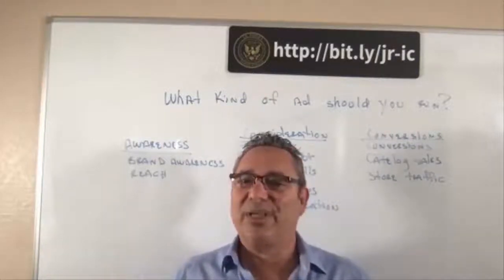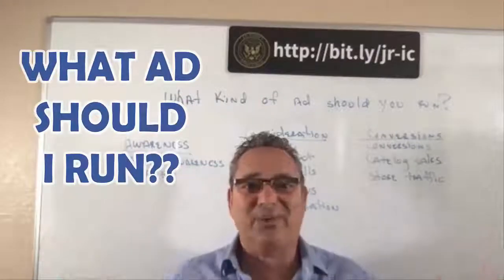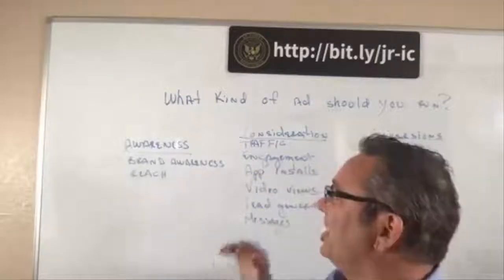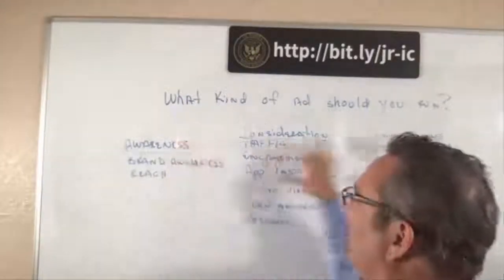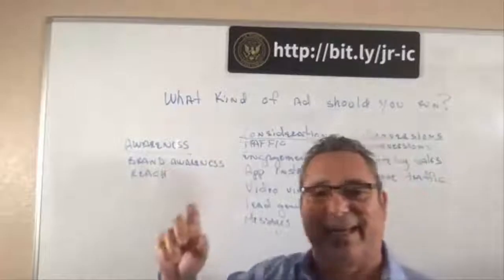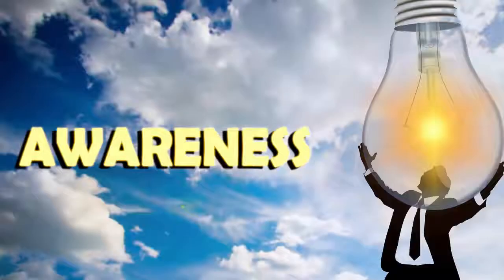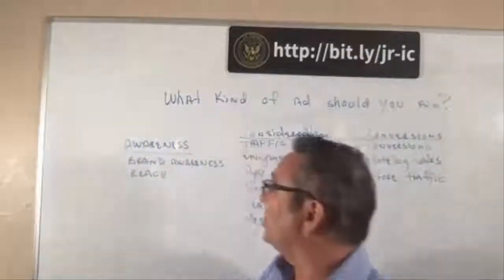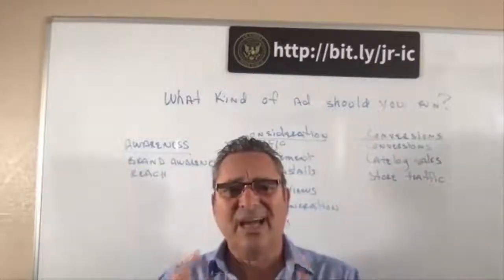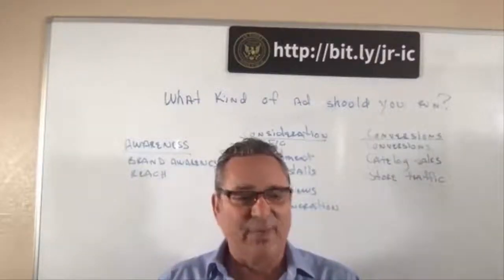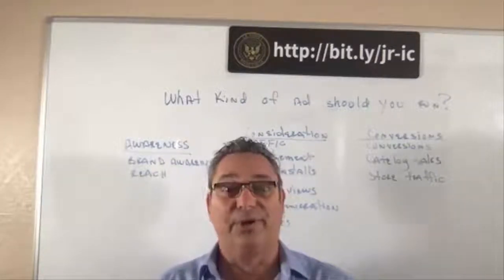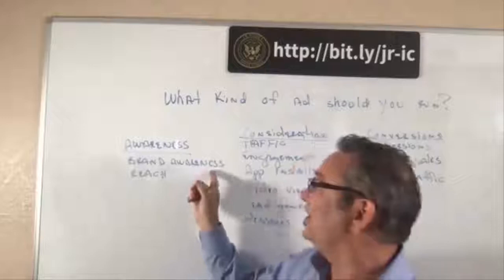The number one question I get is: what kind of ad do I do? When you get in there, you're going to have three categories. When you go in there and say I want to do an ad, it's going to first say 'Awareness.' Under awareness, there are two categories. The first is brand awareness. If you want to make people aware of your brand — like Coca-Cola, Ford, or Chevrolet — this is the one you would use.